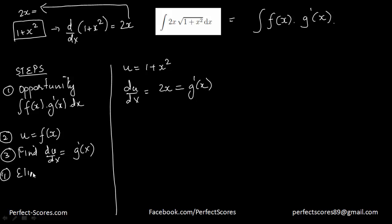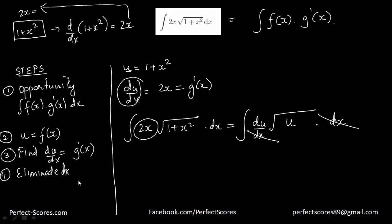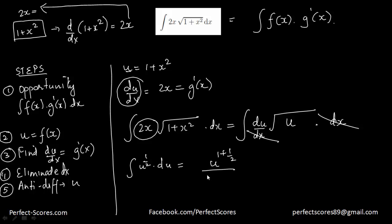Now eliminate x from the integration. We had the integral of 2x times √(1 + x²) dx. Replace 2x with du/dx and (1 + x²) with u, giving (du/dx)·√u·dx. The dx terms cancel. Then perform anti-differentiation on √u, which is u^(1/2), to get u^(1 + 1/2) divided by (1 + 1/2) plus c, which equals u^1.5 divided by 1.5 plus c.